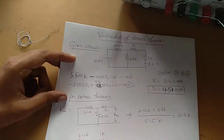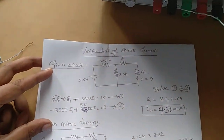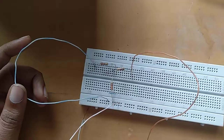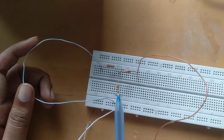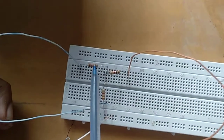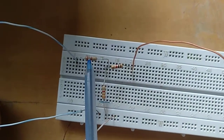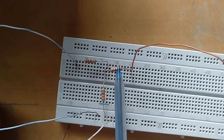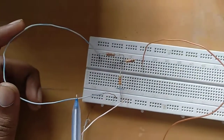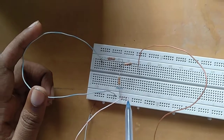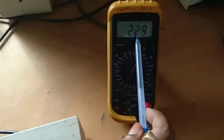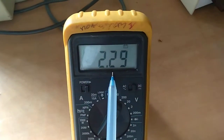We will go for the verification of this theorem practically also. This is the circuit for R Norton — to find R Norton. This is a 2.2 kohm resistor, this is a 1 kohm resistor, this is a 3.3 kohm resistor, and the voltage source is short-circuited here. So R equivalent equals 2.29 kohms.